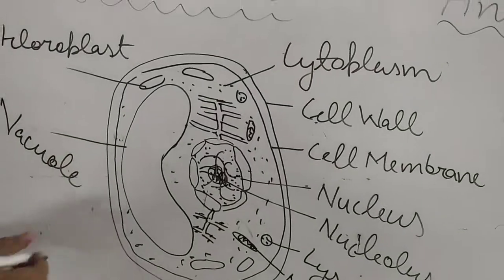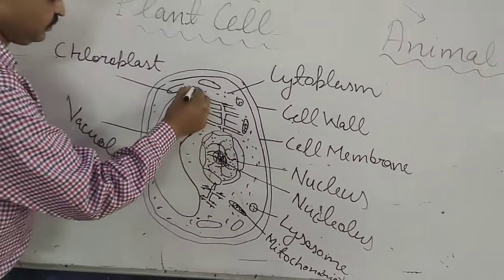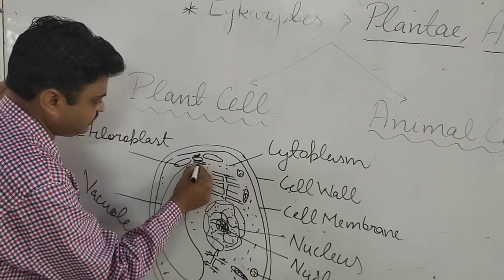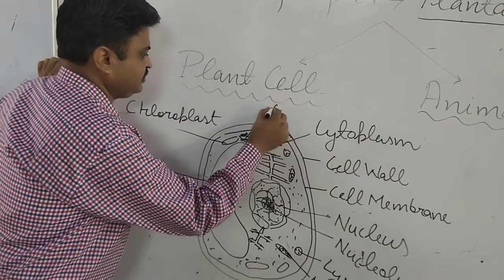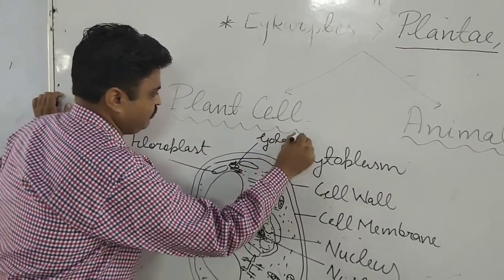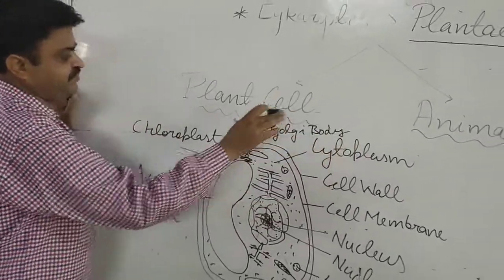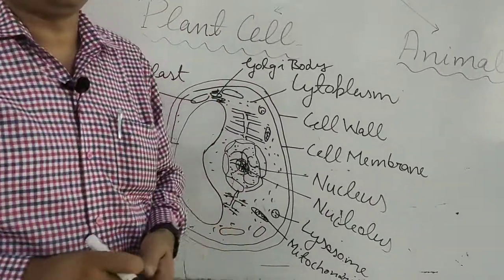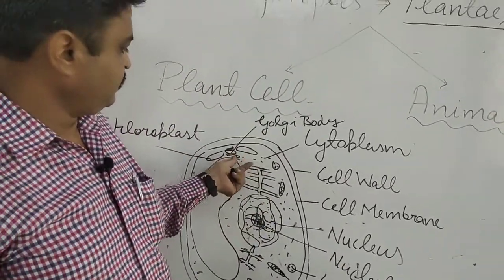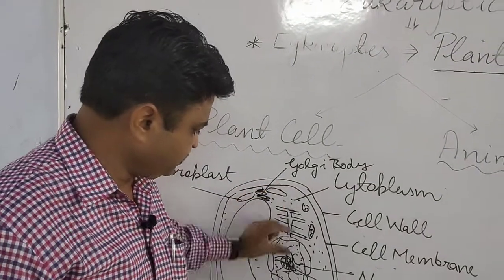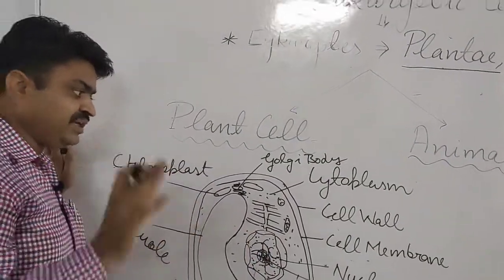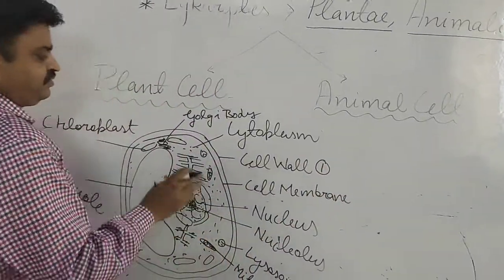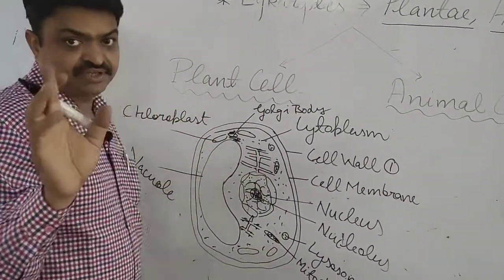There are parallel vesicles found in the cell known as Golgi body. The main function of the Golgi body is to help in packaging and metabolism. The main structure found only in the plant cell is the cell wall, which provides rigidity to the plant cell.